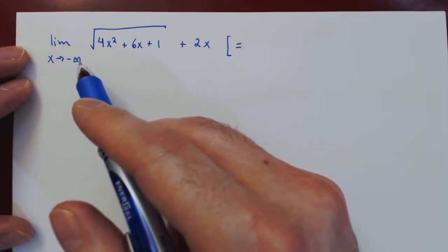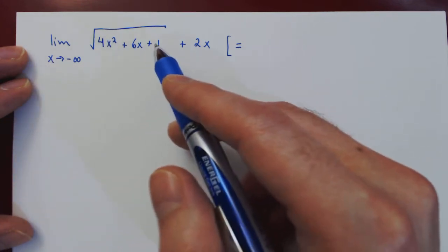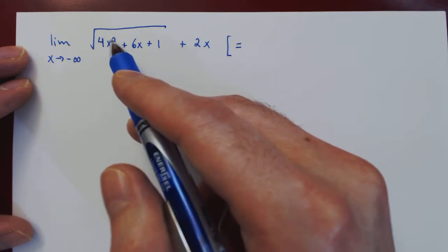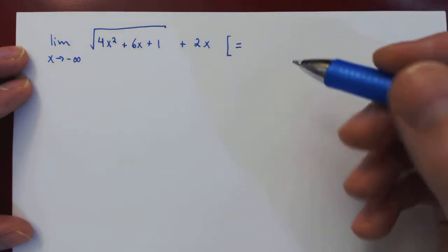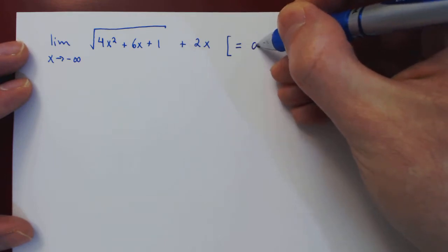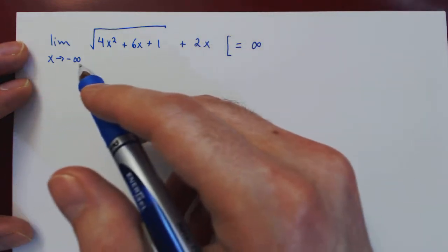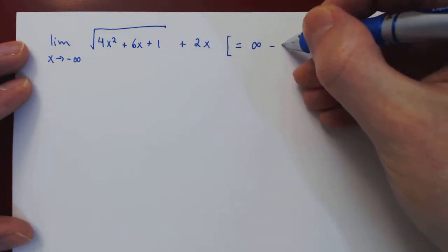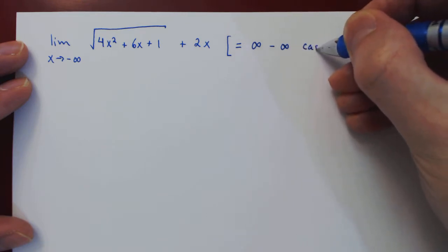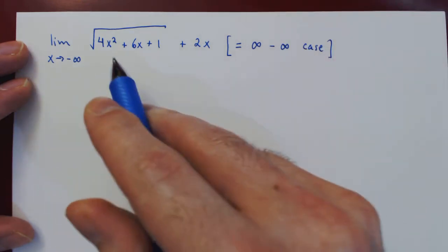As x goes to negative infinity, inside the square root the largest term is 4x² which will go to positive infinity, and the root of infinity is also infinity. Then plus 2x, but as x goes to negative infinity, 2x also goes to negative infinity.